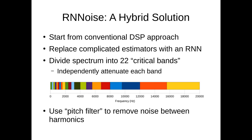Each of these 22 bands is independently attenuated, so we have a gain for each of these bands, and it controls how each band is modulated. This works pretty well except for one case when we have voiced speech and we have noise between pitch harmonics, and to handle that case we have a pitch filter that acts as a comb filter and removes the noise between the harmonics to get actual clean speech.